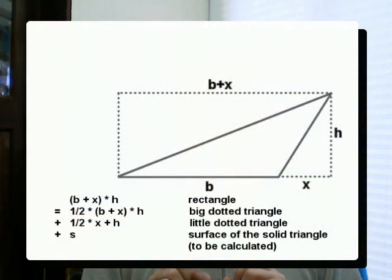Also, you can see a smaller triangle, which has the size, again, according to the very first example that we showed, a half times x times h. The whole thing, the whole rectangle, has a surface of h times b plus x.